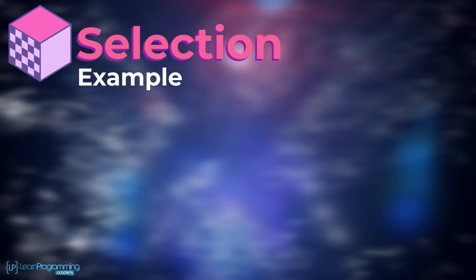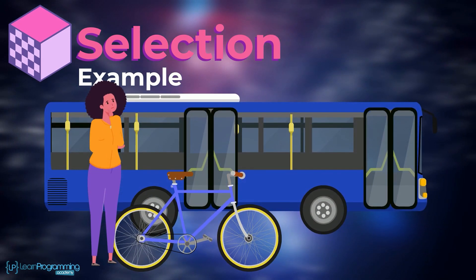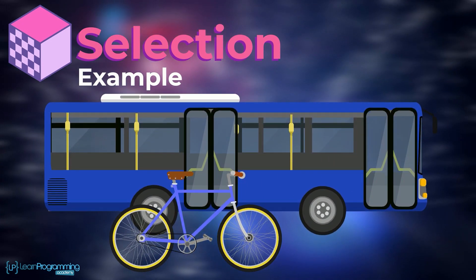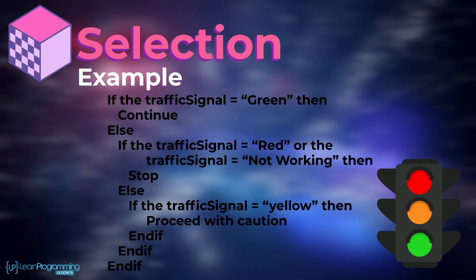The second building block is selection. Now selection in the real world might be you deciding to either ride your bike to work, take the bus to work or walk to work. A programming example of this using English rather than a specific programming language might look like this.